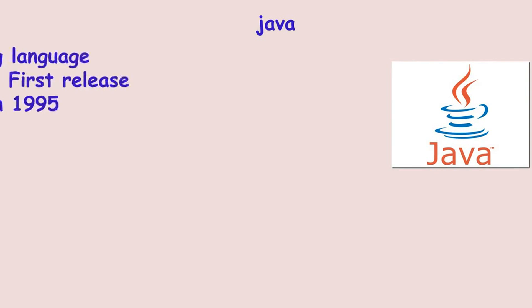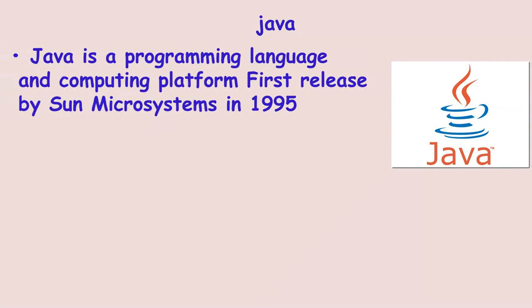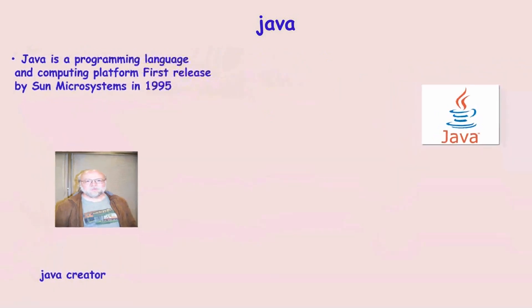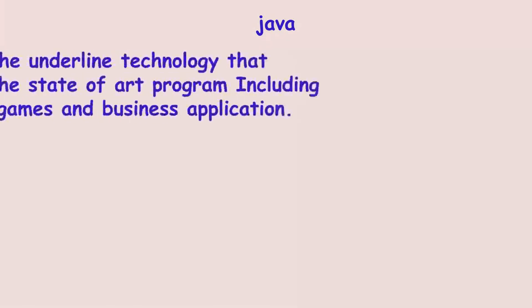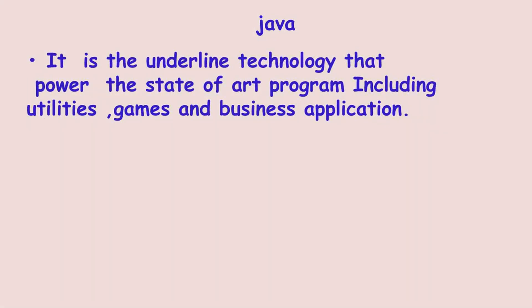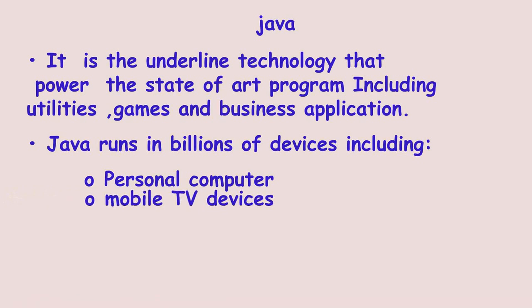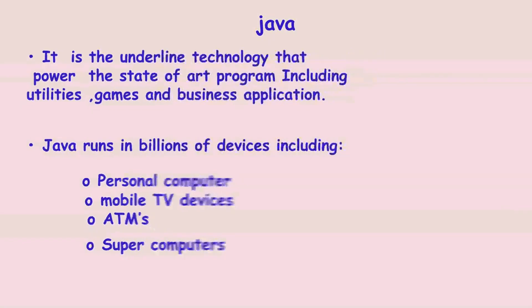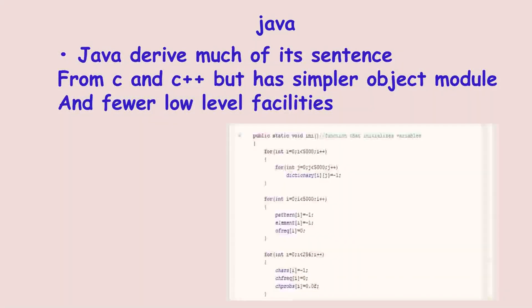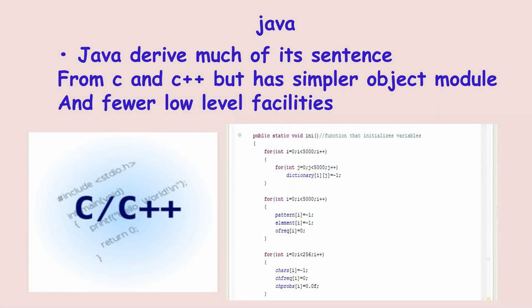Java is a programming language and computing platform first released by Sun Microsystems in 1995. It is the underlying technology that powers state-of-the-art programs, including utilities, games, and business applications. Java runs on billions of devices worldwide, including personal computers, mobile and TV devices, ATMs, supercomputers, and many more. The language derives much of its syntax from C and C++, but has a simpler object model and fewer low-level facilities.